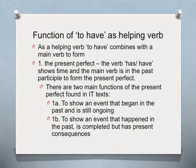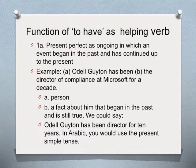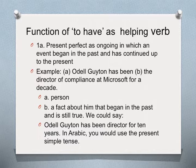There are two main functions of the present perfect in IT texts. The first is to show that an event that began in the past is still ongoing. We have this example: Odell Guyton has been the director of compliance at Microsoft for a decade. Here we have the person, Odell Guyton, and a fact about him that began in the past and is still true — he began as director 10 years ago, and he is still the director.